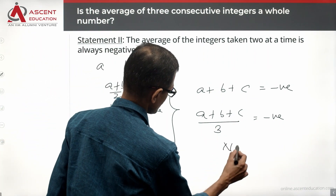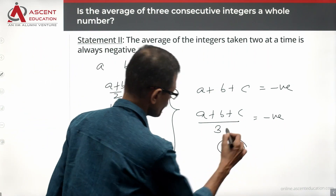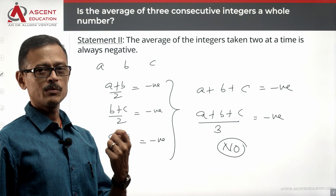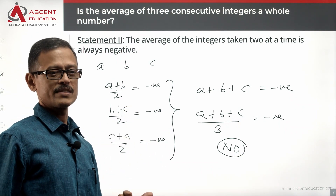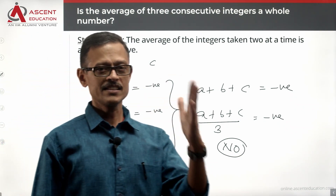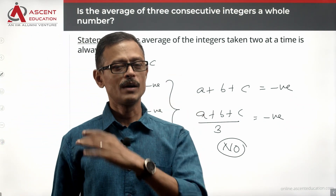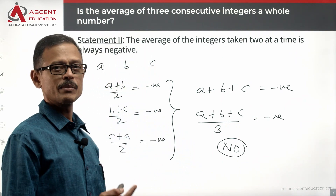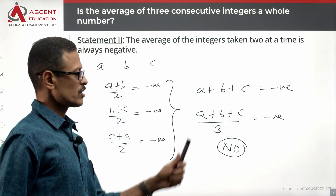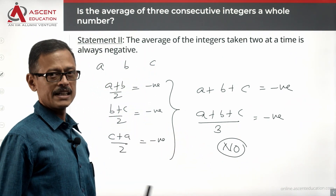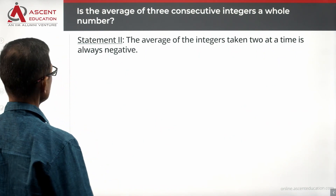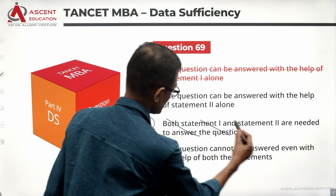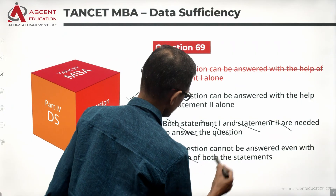We are able to arrive at a definitive answer: no, the average is not a whole number. By taking Statement 2 alone, we have been able to come up with a definitive no. Since we have a definite answer, the data is sufficient. Statement 2 alone is sufficient, so the answer is choice B. We can eliminate options C and D.